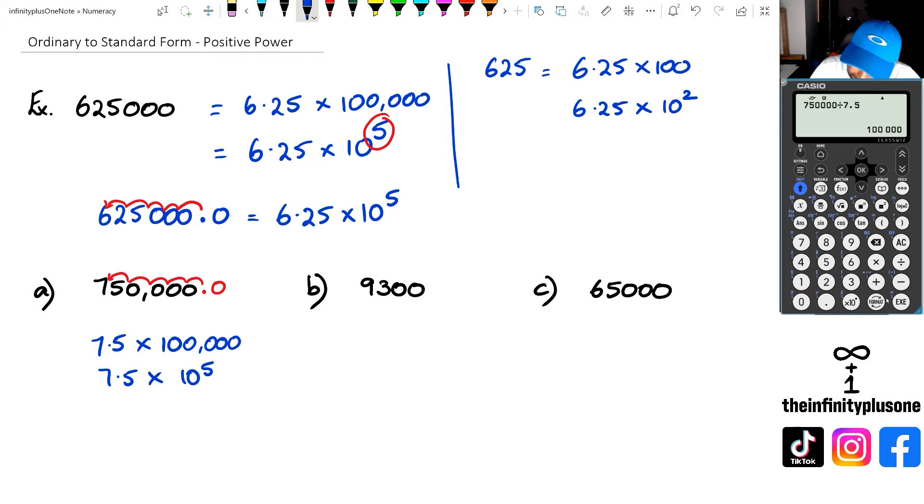Let's look at example B: 9,300. I'm going to write that as 9.3 times - what is it going to be? - 1,000. If you're unsure, you could go 9,300 divided by 9.3. This gives you 1,000. And of course, 1,000 is the same as 10 to the power of 3. If you look at 9,300.0, we're moving 3 decimal places, so it becomes 9.3 times 10 to the power of 3.